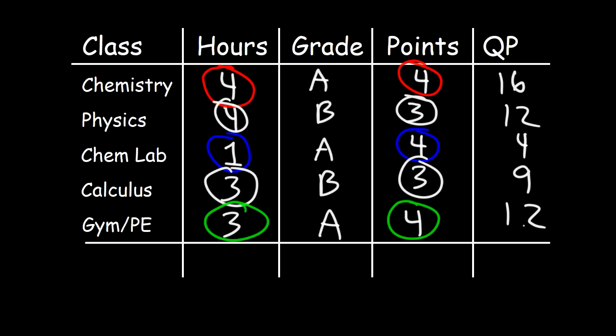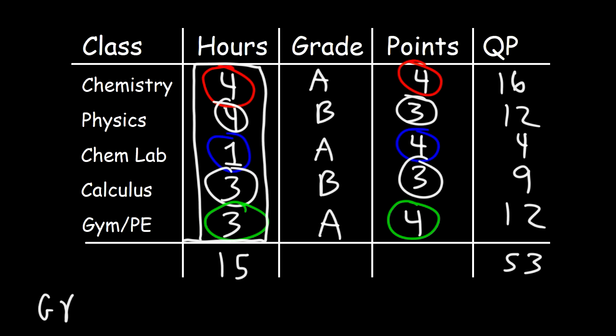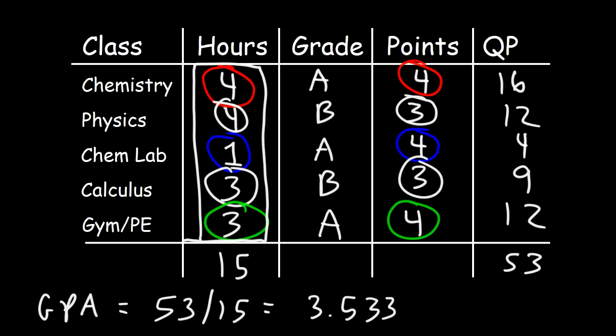Now let's calculate the total number of credit hours: four plus four is eight, plus one is nine, plus three is twelve, plus three is fifteen. Now calculate the total quality points: 16 plus 12 plus four plus nine plus 12 equals 53 points. So the GPA is 53 divided by 15, which gives 3.53 repeating.